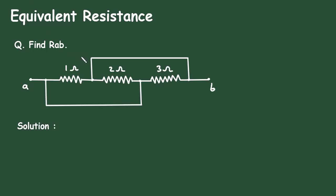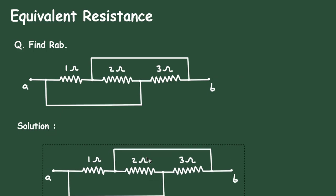To get the free nodes of electrical circuits, check the link in the comment section and install the app for free. Equivalent resistance question: find RAB for this circuit. We have to find its equivalent resistance.